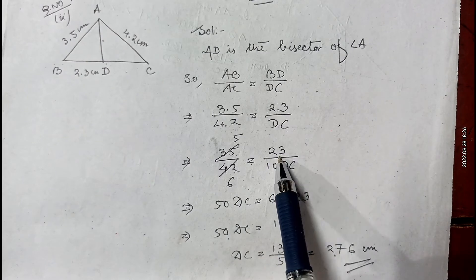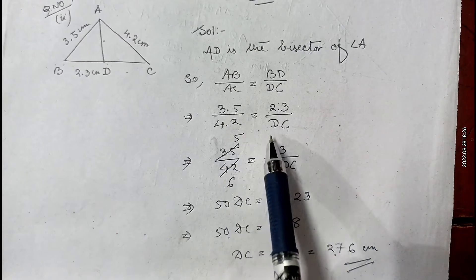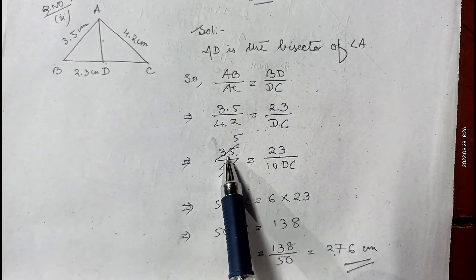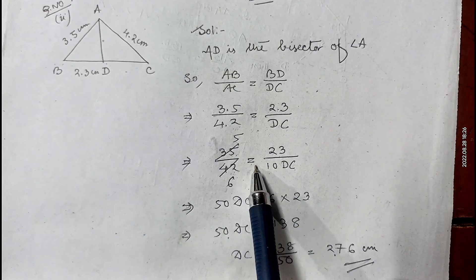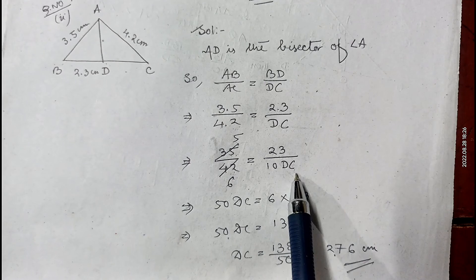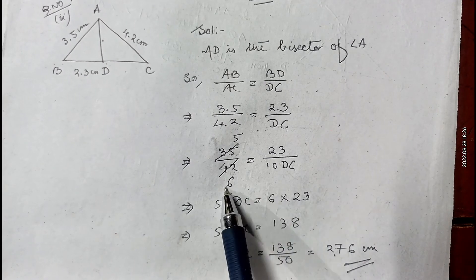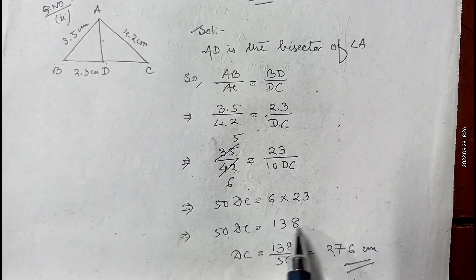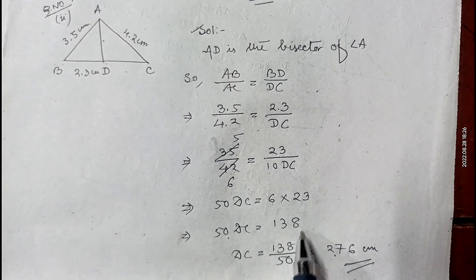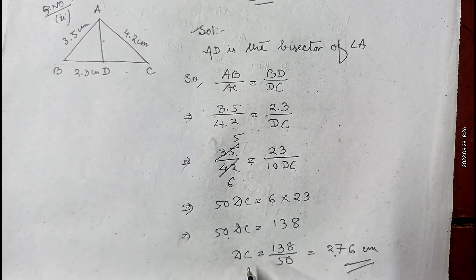Multiplying all numbers by 10 to remove the decimals: 35 by 42 equals 23 by 10·CD. Simplifying 35 and 42 by 7 gives 5 by 6. So 5 by 6 equals 23 by 10·DC. Cross multiplying: 5 into 10·DC equals 6 into 23, so 50·DC equals 138, and DC equals 138 by 50, which gives 2.76 centimeters. Therefore the required length of DC is 2.76 centimeters.